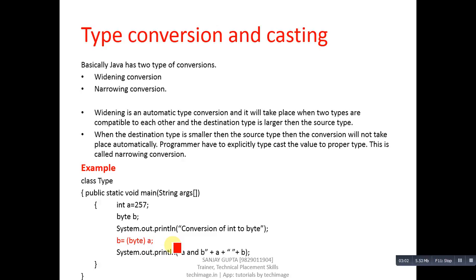If data loss will be there in case of explicit type conversion or narrowing, then this has to be taken care of by the programmer, and this is the only reason why it is done explicitly.